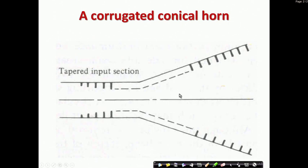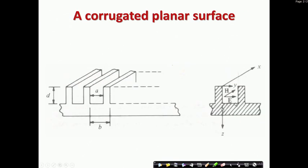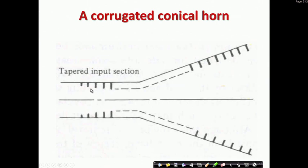This is the side view. Corrugations mean that some portion of the metal is removed. For a planar surface, corrugations look like this — on those two surfaces these are the corrugations, meaning these portions are metallic but the portions between them are non-metallic. This extends throughout the surface. Please add this portion to the previous lecture.